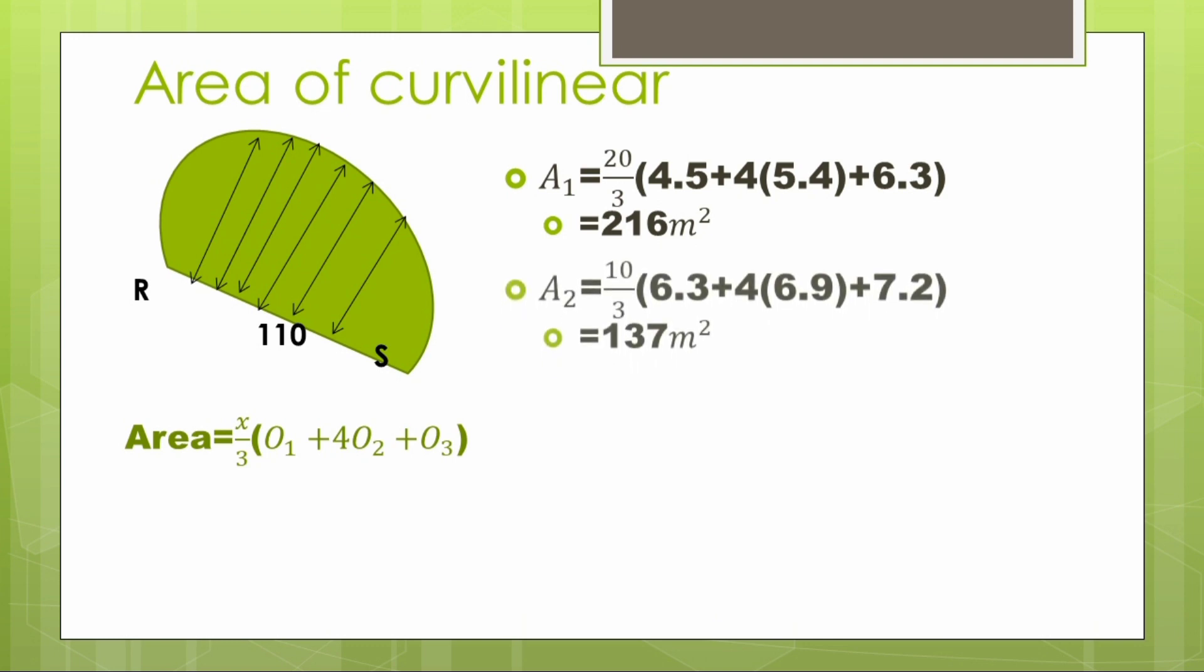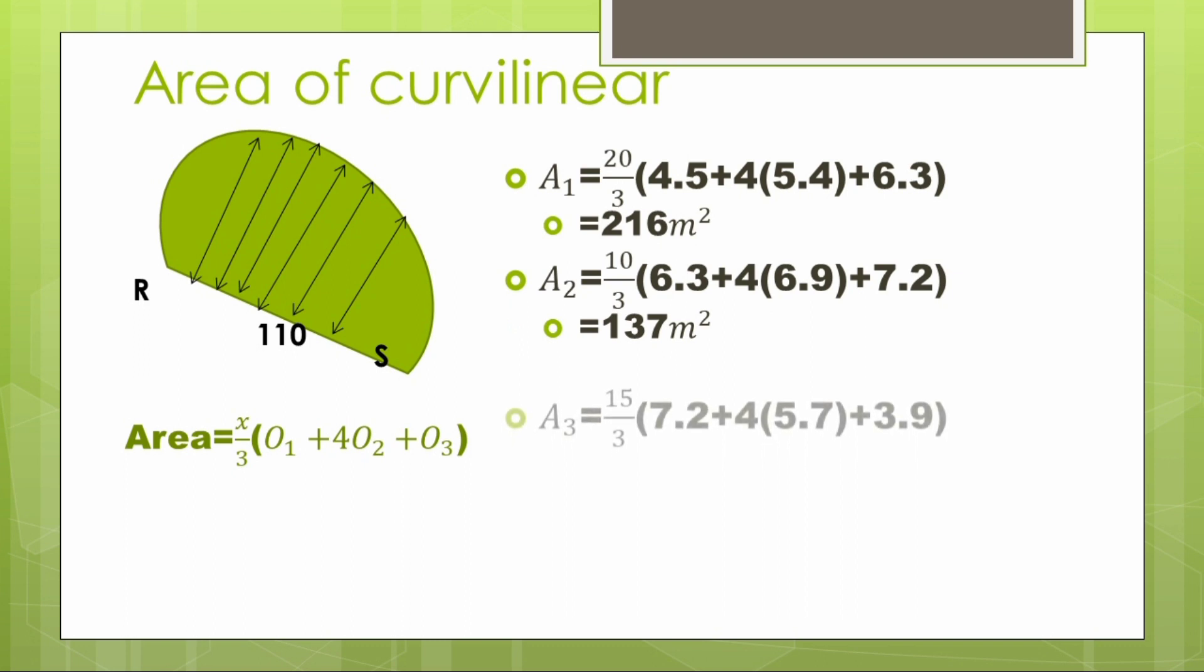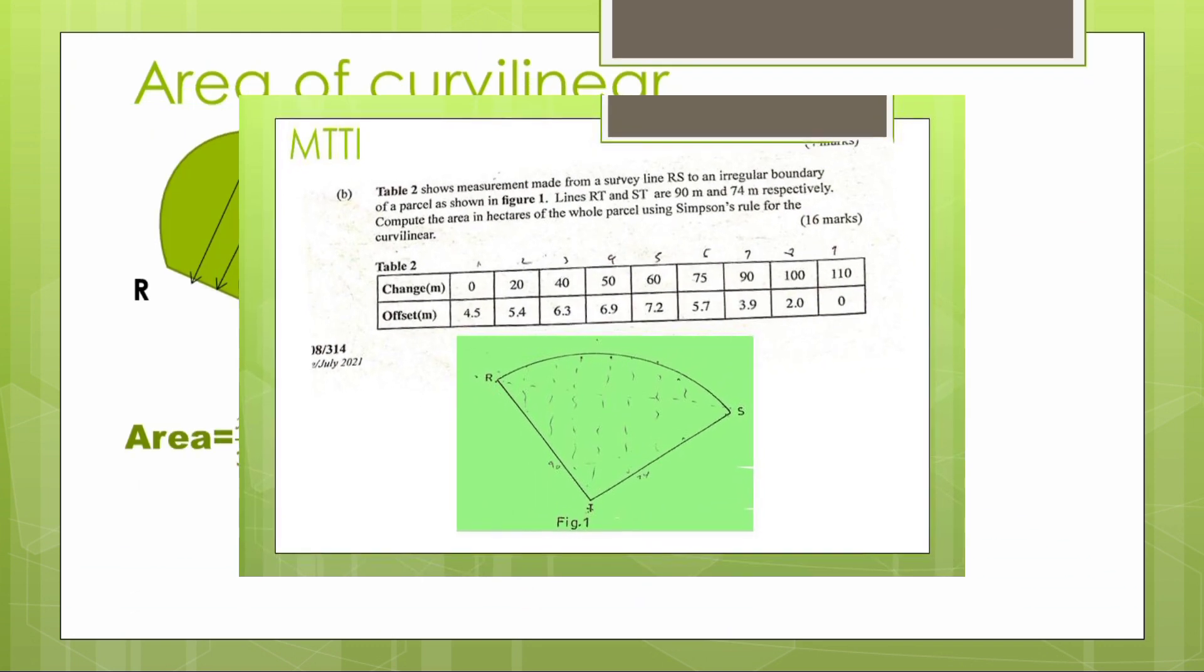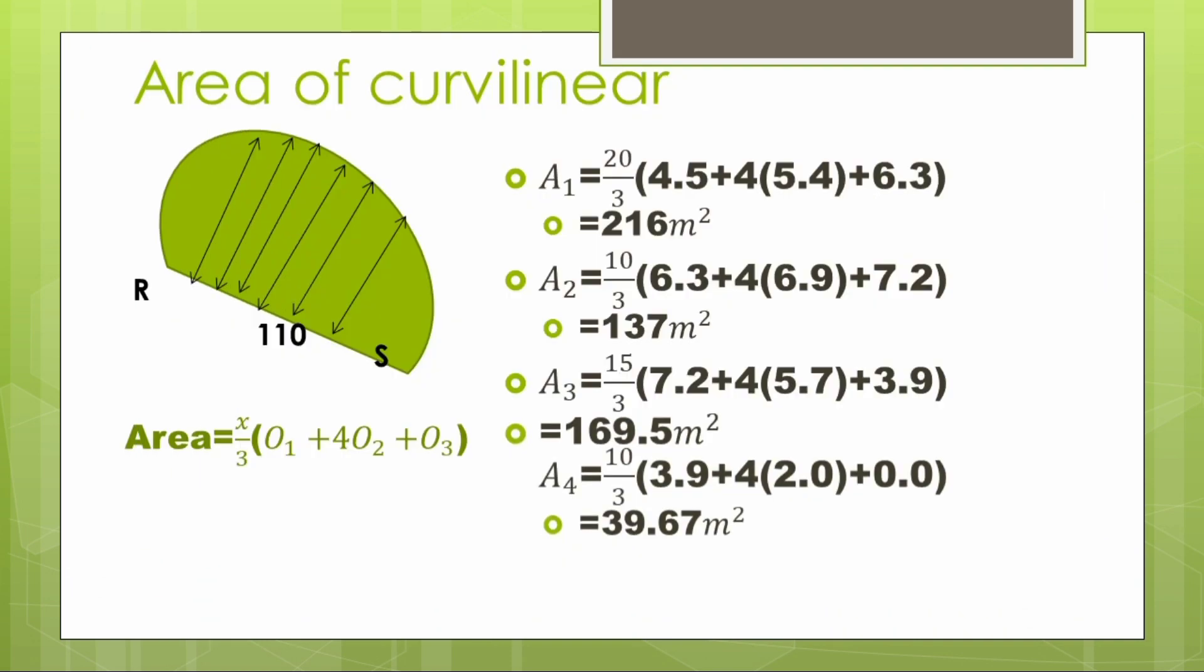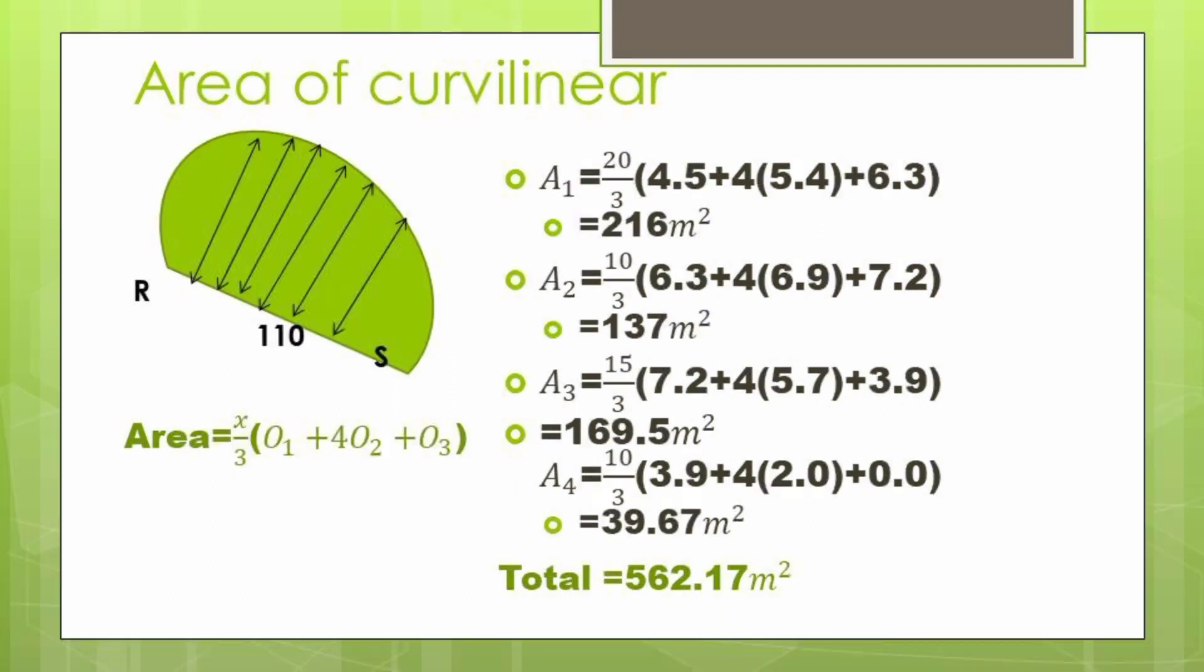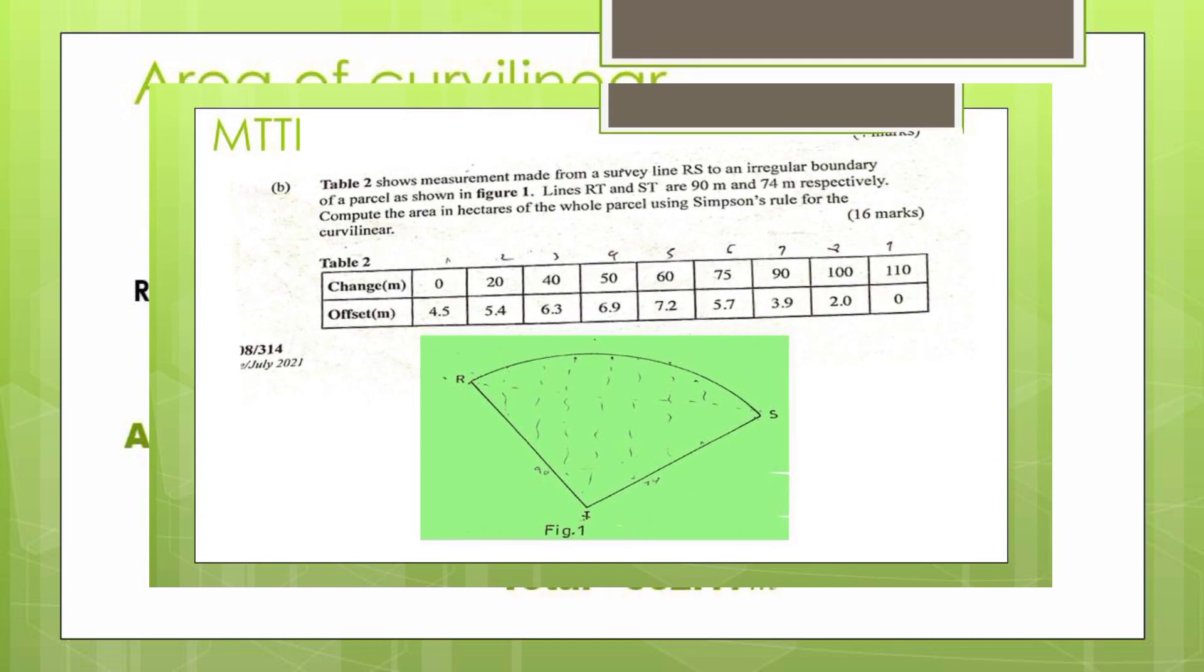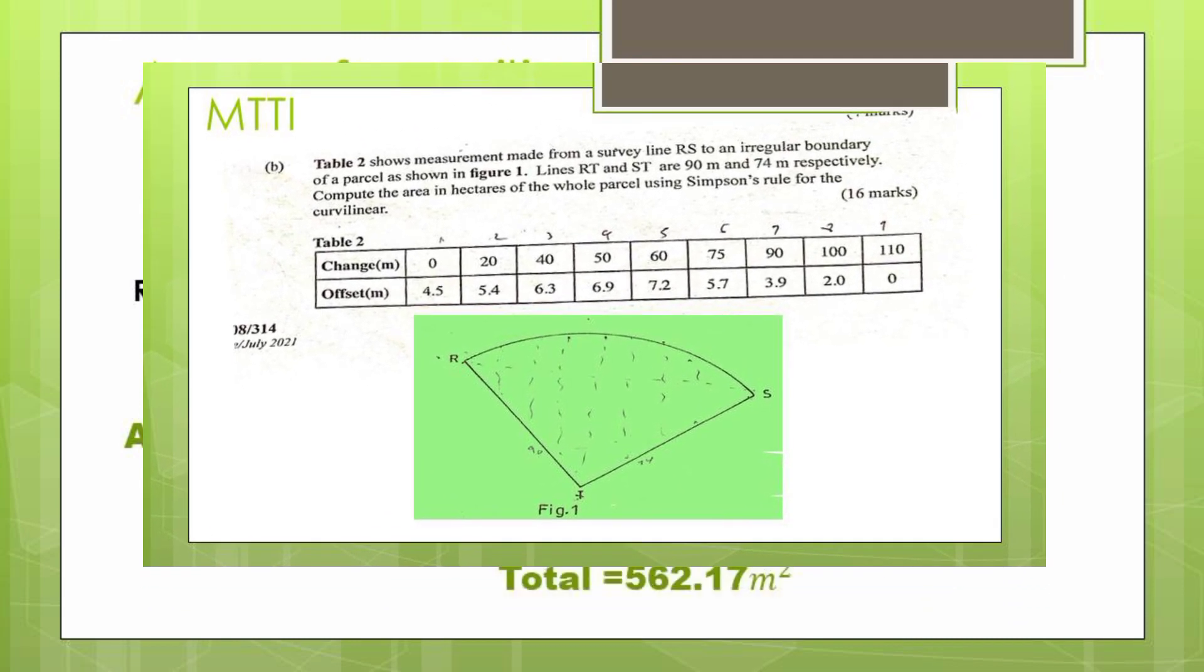Due to the fact that the changes have a different interval, so the general formula cannot be used there. So where x will be represented by the difference in the intervals, and our intervals there with an interval of 20, another interval of 10, another interval of 15 meters. So you can observe from the table the difference in the intervals.